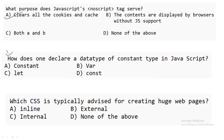The next question: how does one declare a constant data type in JavaScript? To declare a constant, we use the 'const' keyword — this applies in JavaScript, Java, C++, C, and other programming languages.